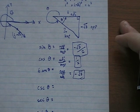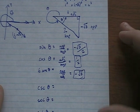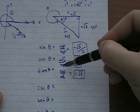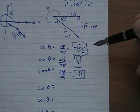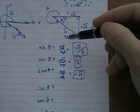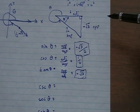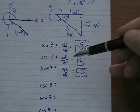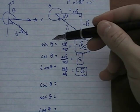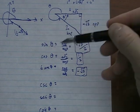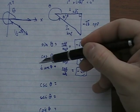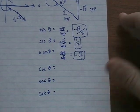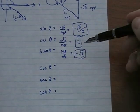A lot of people learn SOH-CAH-TOA, but I teach it as: 'Some Old Hippie Caught Another Hippie Tripping On Acid.' SOH: Sine is Opposite over Hypotenuse. CAH: Cosine is Adjacent over Hypotenuse. TOA: Tangent is Opposite over Adjacent. That way I always know exactly where to put the O and the A.